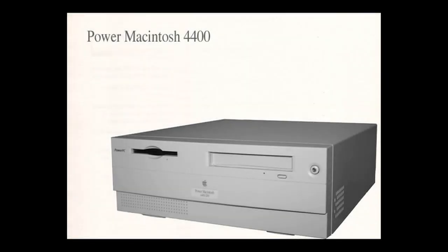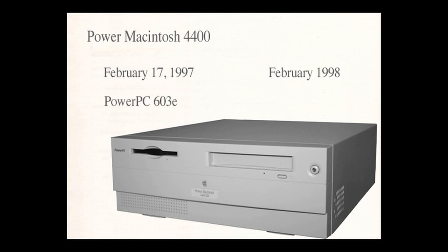In this video we'll be talking about the Power Macintosh 4400, the North American model. The Power Macintosh 4400 was introduced February 17th, 1997, discontinued February 1998. It used the PowerPC 603e processor, this model running at 200 megahertz. It had 32 megabytes of RAM installed.